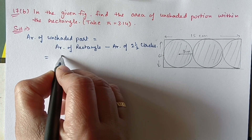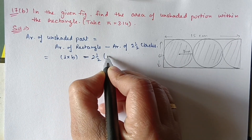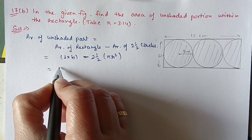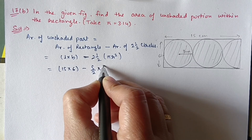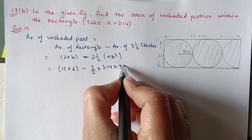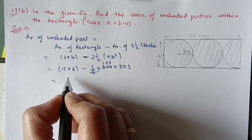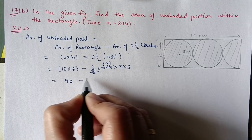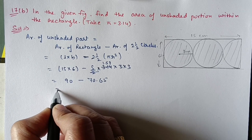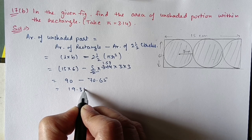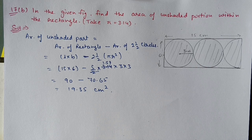Area of rectangle = length × breadth = 15 × 6 = 90. Area of two and a half circles = 5/2 × πr² = 5/2 × 3.14 × 3² . After multiplication we get 70.65. So area of unshaded part = 90 − 70.65 = 19.35 centimeter square.